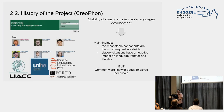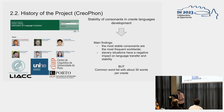This project started when I was a visiting student at the University of Neuchâtel in Switzerland. We studied the stability of consonants in creoles and found that the most stable consonants are the most frequent worldwide, and that slavery situations have a negative impact on language transfer and stability. But these results are based on just 30 words per creole, which is not much, so we needed to expand the dataset.